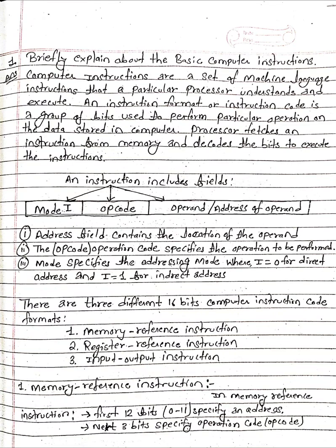Briefly explain about the basic computer instructions. Computer instructions are a set of machine language instructions that a particular processor understands and executes. An instruction format or instruction code is a group of bits used to perform particular operations on the data stored in computer.